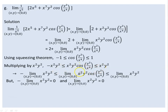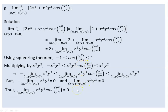By the squeezing theorem, since both bounds go to 0, the limit of x²y² cosine(y²/x⁴) as (x,y) → (0,0) is equal to 0. Therefore, the total limit is 2 + 0 = 2.